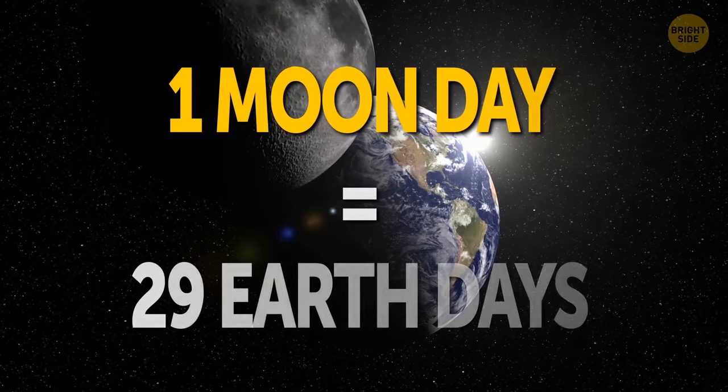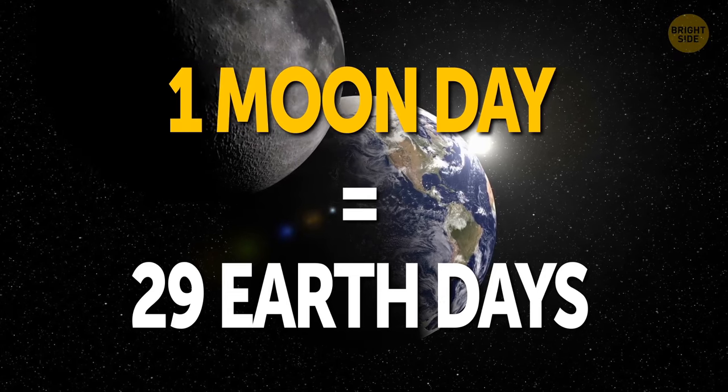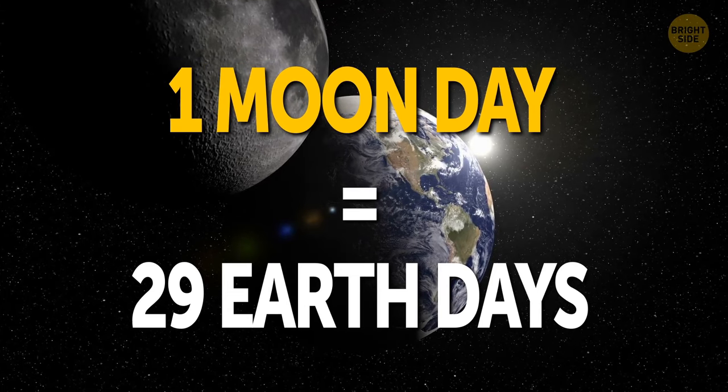One Moon day is equal to about 29 days on Earth. It takes that long for the Sun to cross the lunar sky.